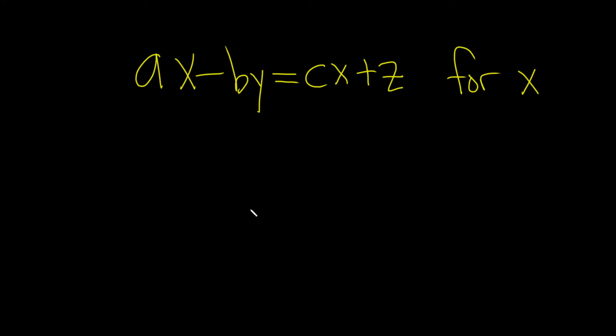So the goal is going to be to get everything with an x on one side by itself. Once we do that, we can factor an x out and finish. So look, this has an x and this has an x. So these things need to be by themselves.